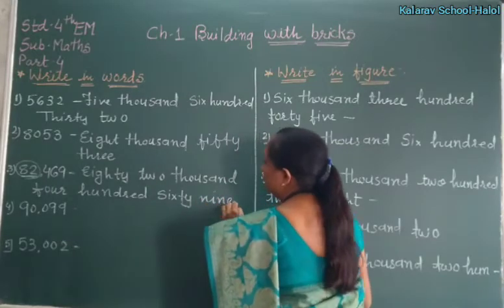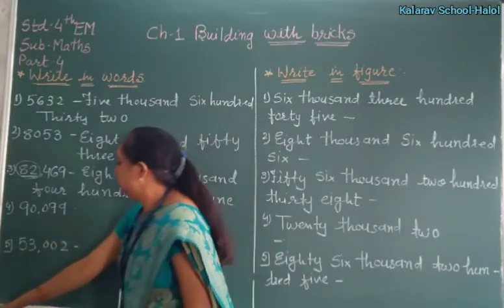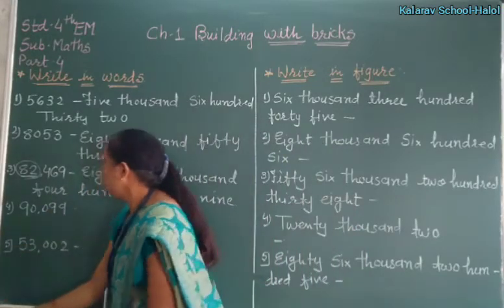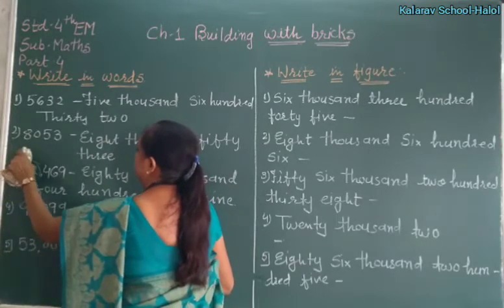Understand? Eighty-two thousand, four hundred, sixty-nine.